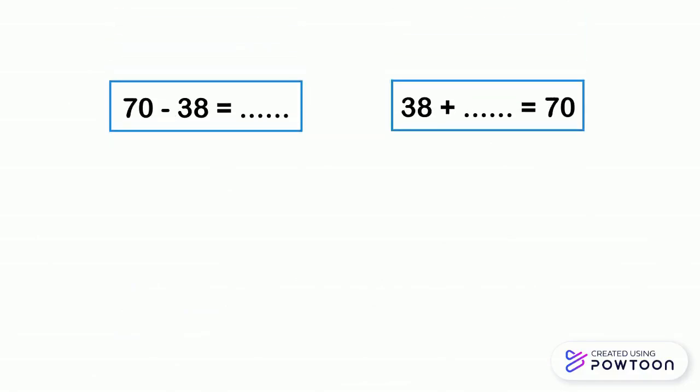Let's take another example. 70 minus 38 equals what? Or 38 plus what equals 70? We start with the smallest number, which is 38. And we jump till we arrive at the first whole tens after 38, which is 40. And we continue jumping ten by ten till we reach 70.